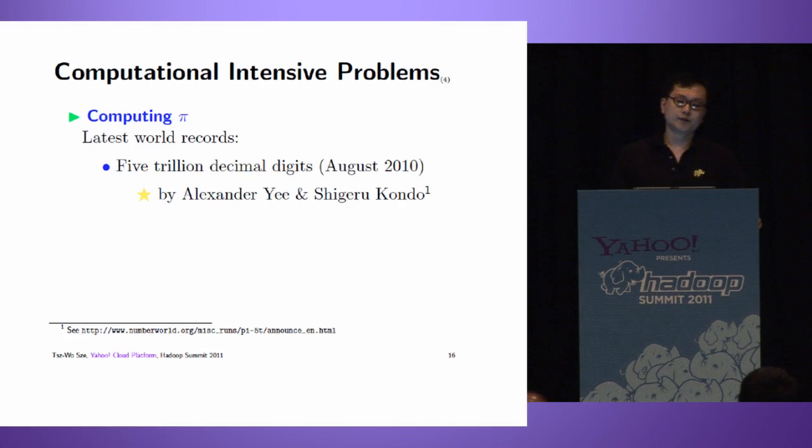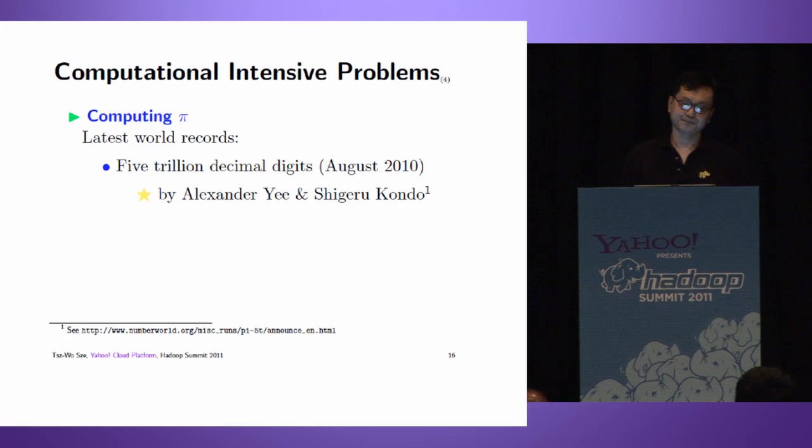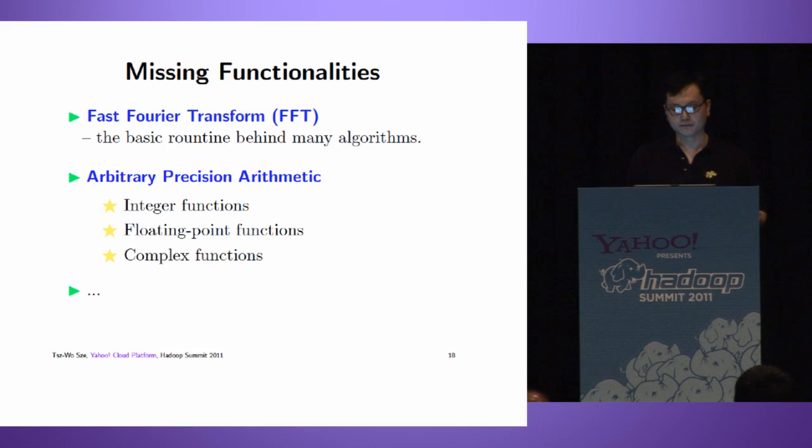Other problems include computing Pi or other mathematical constants. In August 2010, Yi and Kondo computed 5 trillion decimal digits. In July 2010, myself and the Yahoo community computed the 2 quadrillionth bit of Pi.